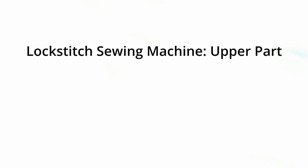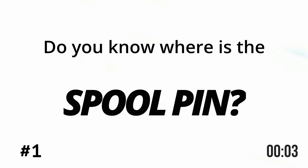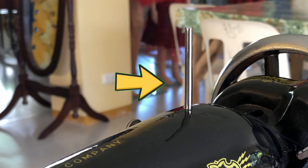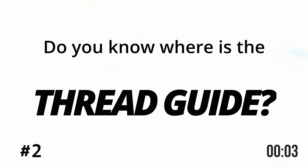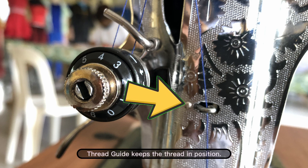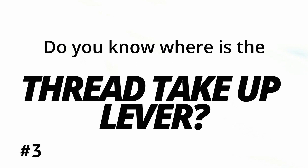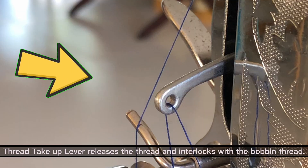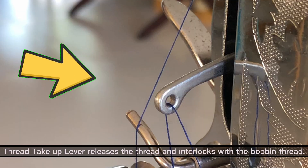For the upper part of the lockstitch sewing machine: the arm. Spool pin is the thread holder. Thread guide keeps the thread in position. Thread take-up lever releases the thread and interlocks with the bobbin thread.